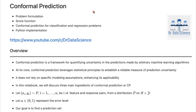Today we are going to start with the problem formulation, then talk about the score functions that are really important in conformal prediction, and then talk about one classification and one regression problem. Finally, we are going to look at the Python implementation of conformal prediction — you're able to really implement this on your own and understand how conformal prediction works.